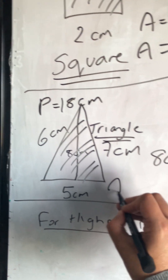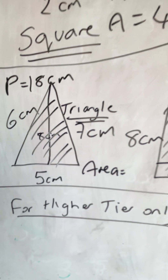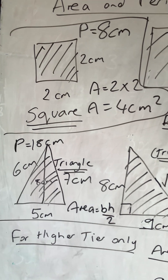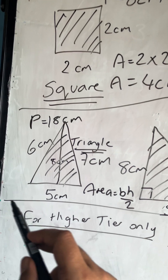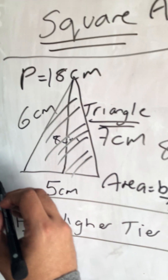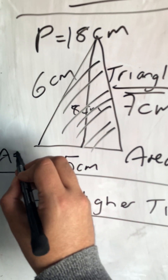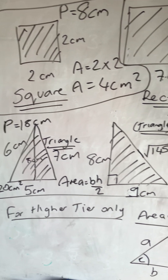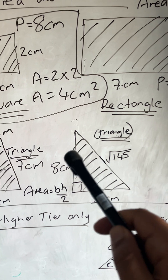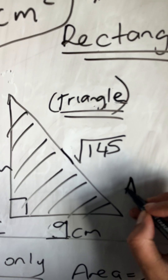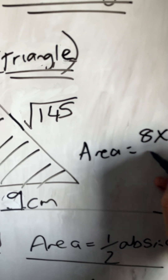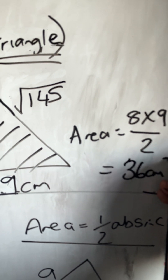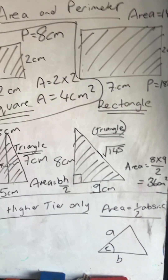The area of a triangle is base times perpendicular height divided by two. So for a triangle with base 5 and perpendicular height 8, the area is 5×8÷2 = 40÷2 = 20 centimetres squared. For another triangle with base 8 and height 9, the area is 8×9÷2 = 72÷2 = 36 centimetres squared.